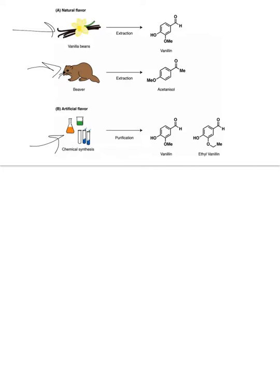The resultant molecule for natural and artificial sources is the same — the vanilla flavor molecule produced by both natural and artificial synthesis is identical. Artificial flavors generally cost less to produce than finding and harvesting the natural sources of those chemicals.